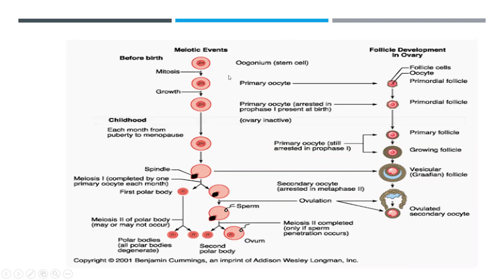We will study these processes in detail in the 12th standard curriculum. From two daughter cells formed in meiosis 1, four daughter cells are formed after meiosis 2. That's it for today's lecture — I hope you understood. Thank you.